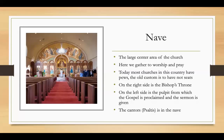Next we have the nave — the large central area of the church where we gather to worship and pray. Today most churches in this country have pews, though the old custom is not to have any seats. On the right side of the nave you'll find the bishop's throne, where the bishop sits when visiting. On the left side is the pulpit from which the gospel is proclaimed and the sermon is given. The cantors or psaltis are also in the nave.